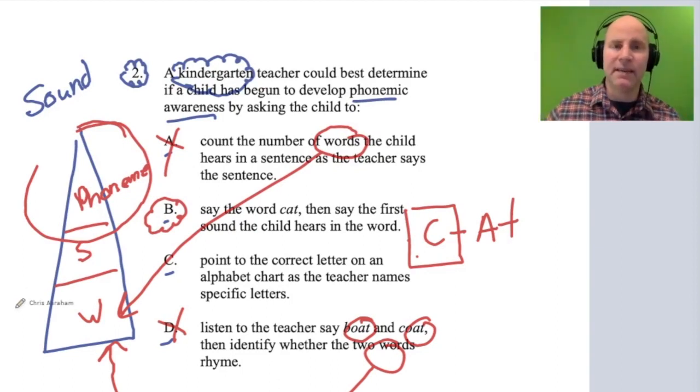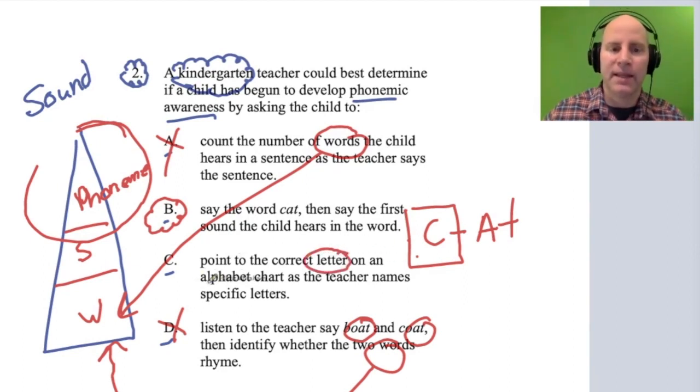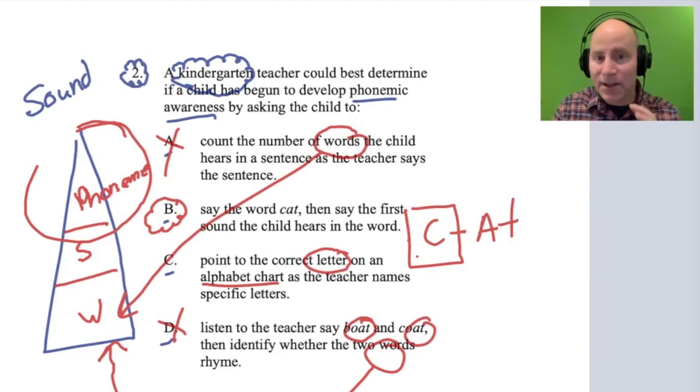C—what's wrong with C? Well, right away it has to do with letters and the alphabet chart. This would be promoting the alphabetic principle—a different idea. It's more letter recognition. The alphabetic principle has a couple of skills involved: being able to name the letter and then associate the predictable sounds.